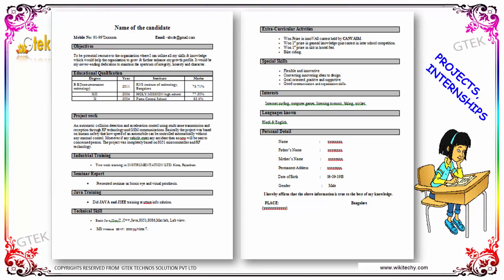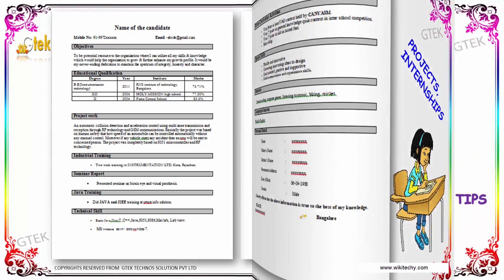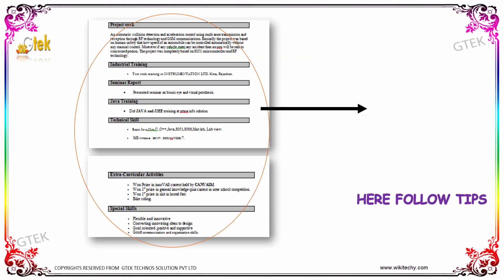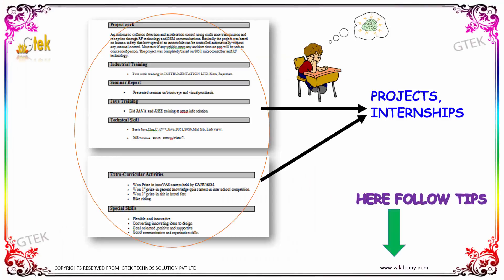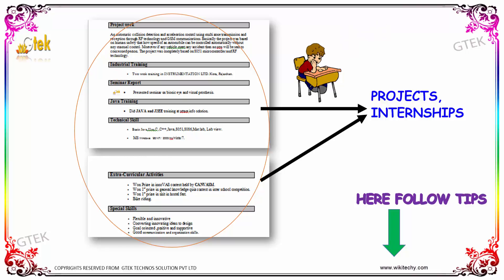In terms of projects and internships, the specifications you need to include are: industrial training, seminar reports, Java training, technical skill sets, extracurricular activities, and special skills. These all come under the category of projects as well as internships.